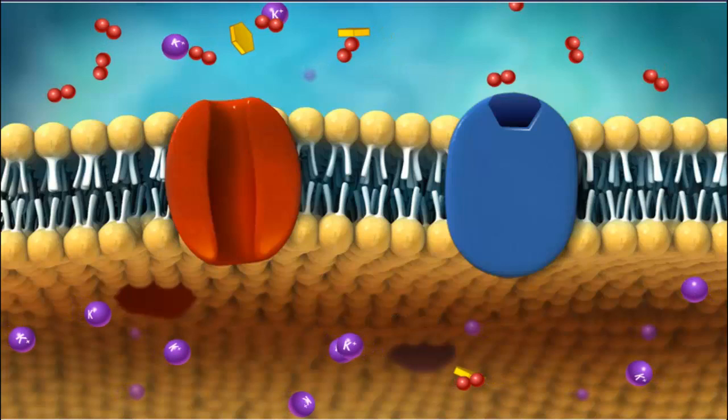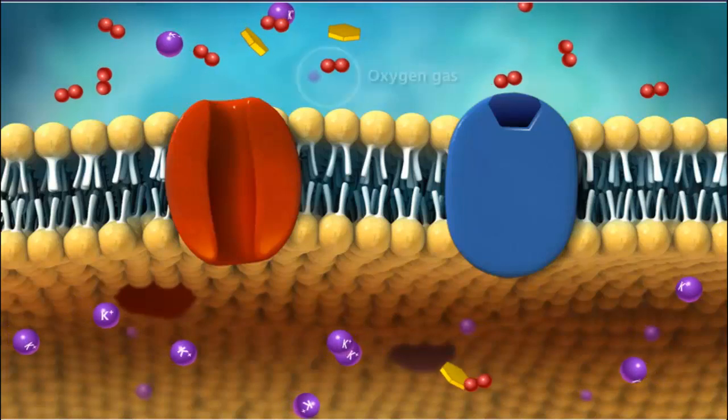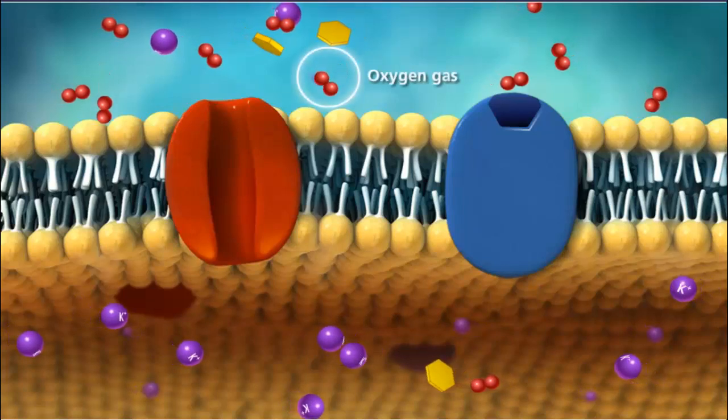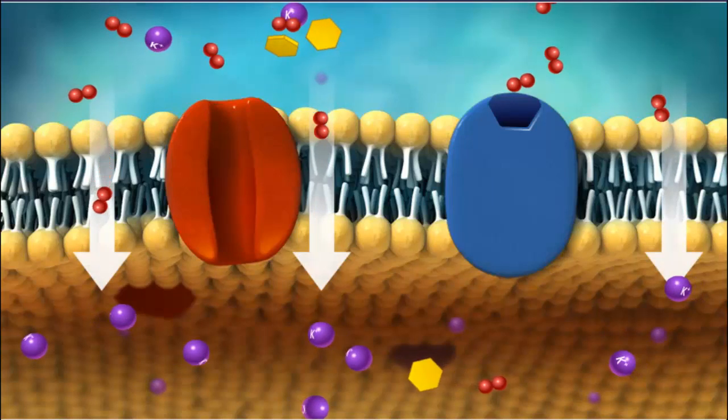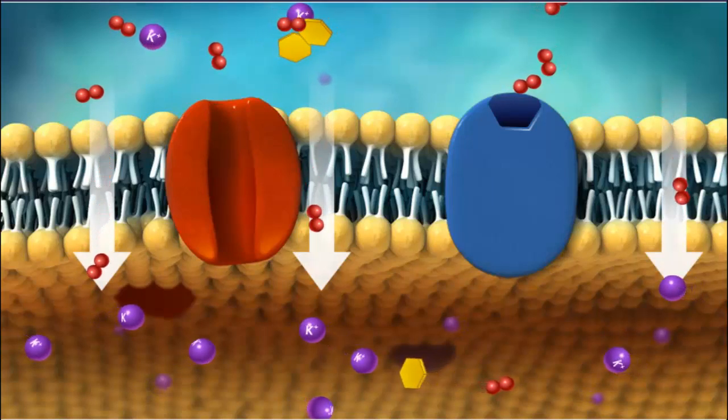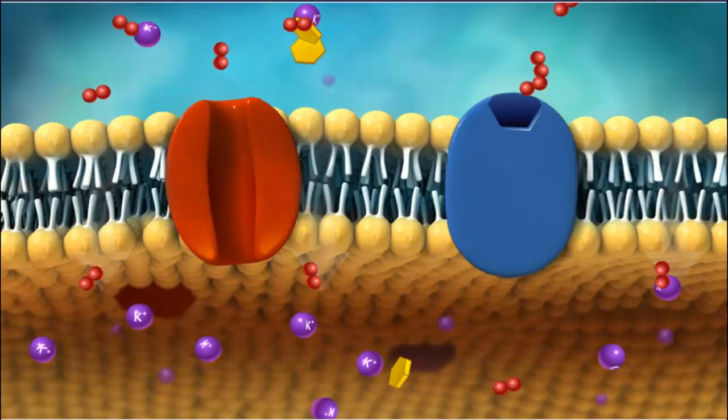Small, non-charged particles, primarily gases such as oxygen and carbon dioxide, can diffuse through the plasma membrane by moving in between the phospholipids in the bilayer.